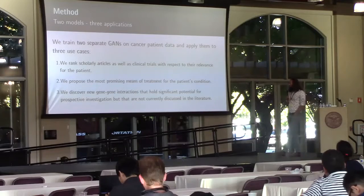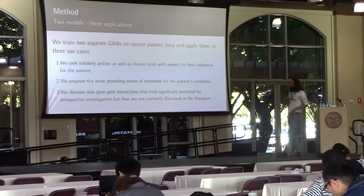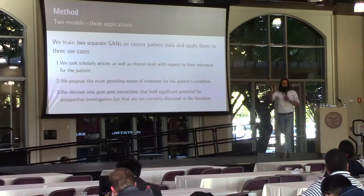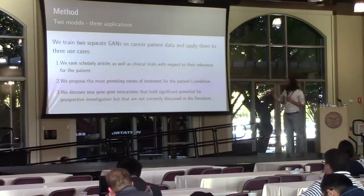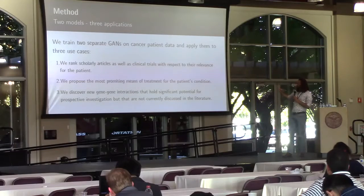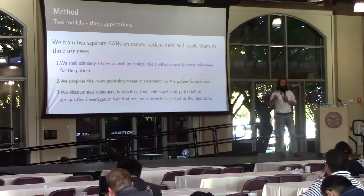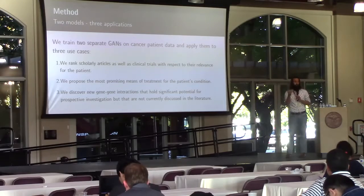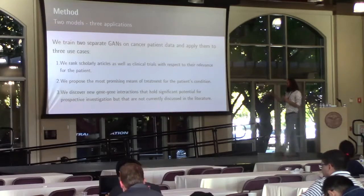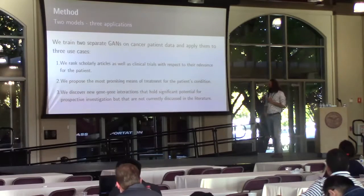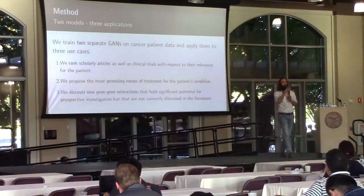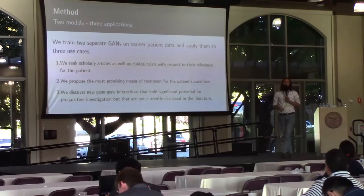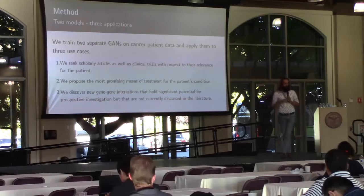So we'll do two models and three applications. The first is standard literature retrieval: patients as queries, especially the genome profile, and we want to rank literature articles. The second is similar but also recommends treatments for the patient — a ranking over possible cures for a particular type of cancer, especially for the genomic marker of the tumor. The third is a bit of a moonshot: can we discover new gene-to-gene interactions? Having seen many pairs of gene mutations co-occurring within patients or papers, can we discover new hypothetical mutation patterns?